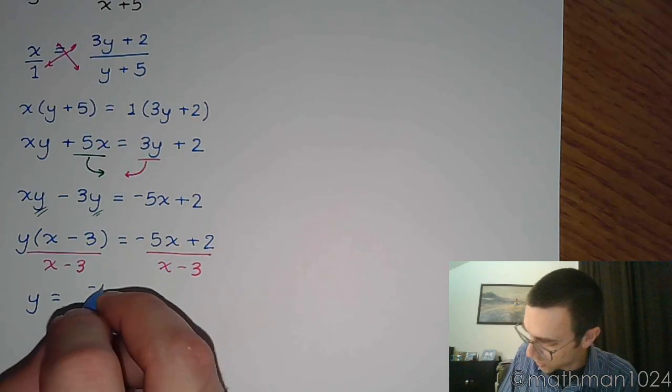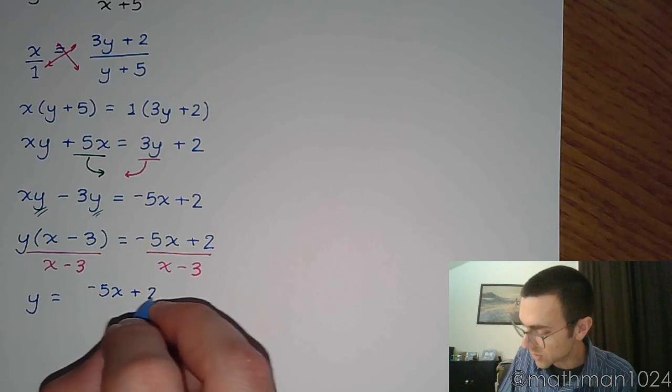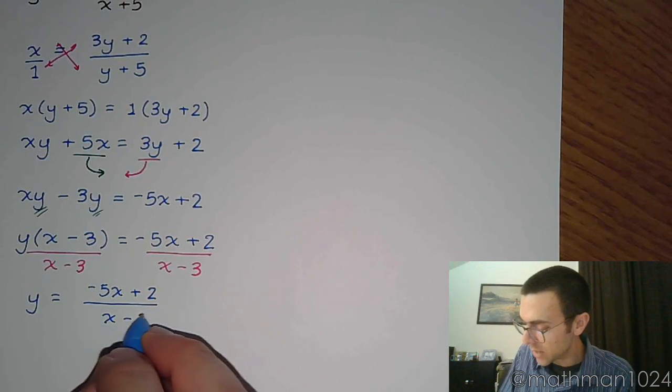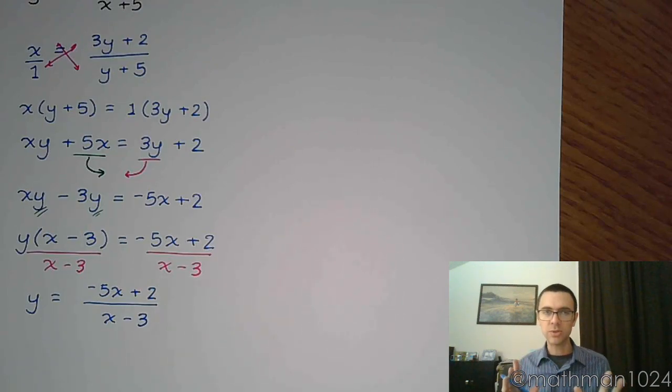So y equals, now be careful where you put that negative. That negative is connected only to the 5x, so it's -5x + 2 over x - 3. Don't put the negative in front unless you're prepared to do some other manipulations.